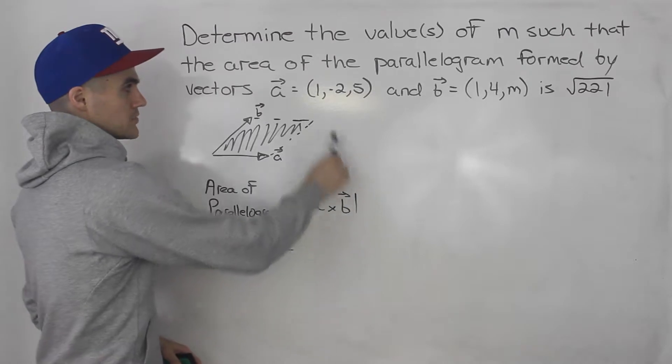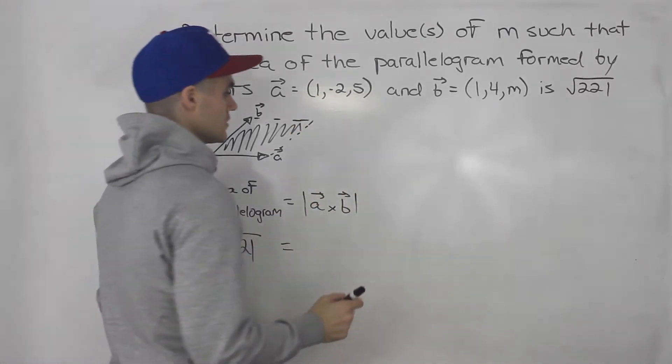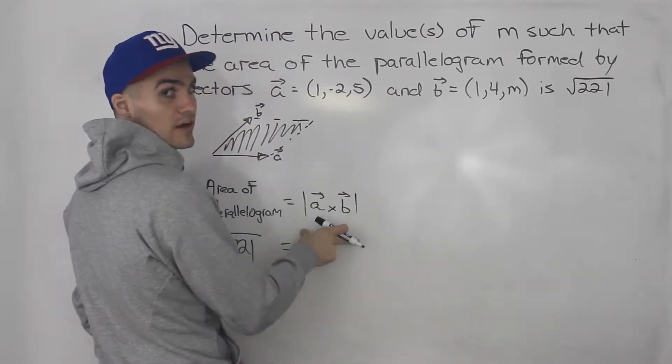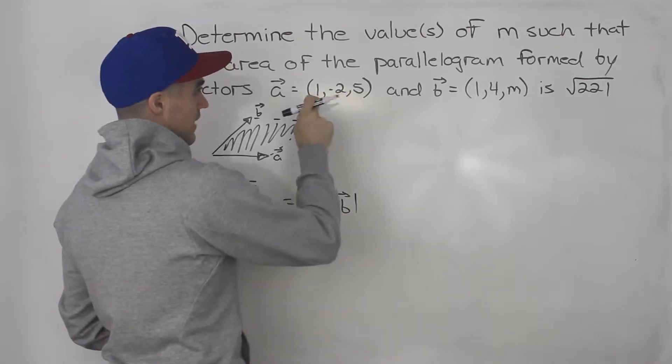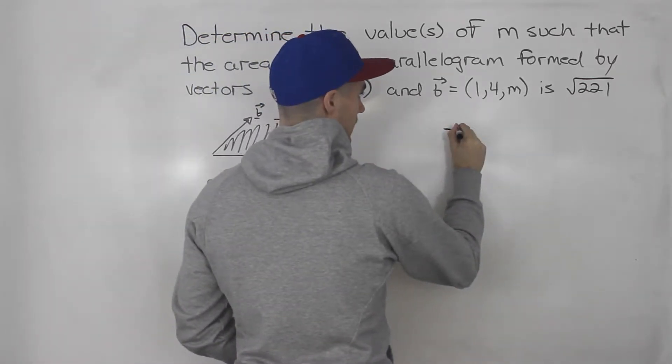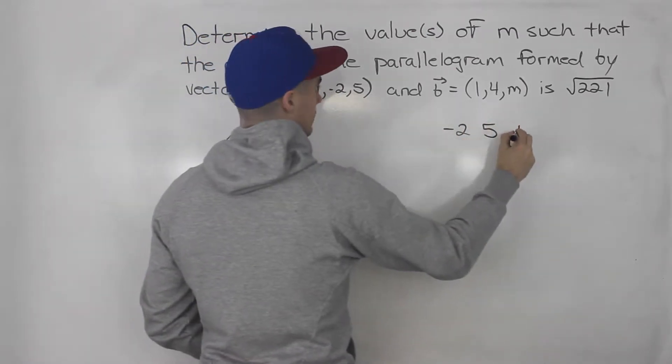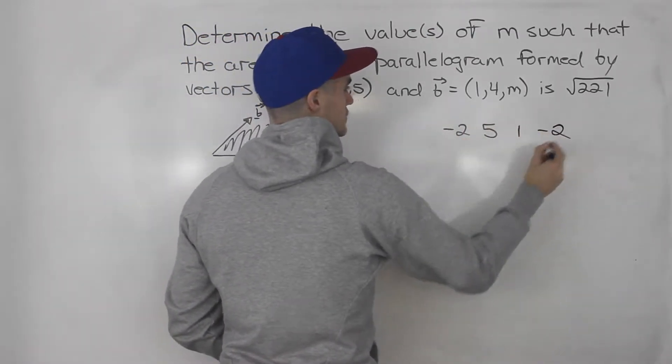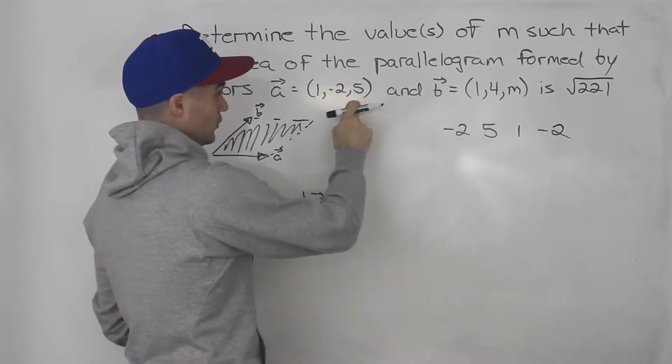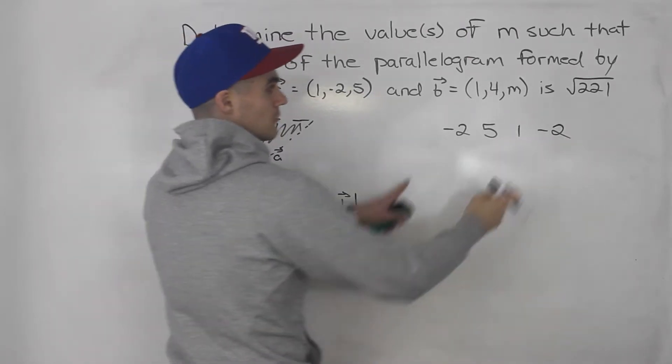The cross product between a and b, we don't know that, or the magnitude of that cross product. So let's find that first. Since a is the first vector, it doesn't really matter actually because we're finding the magnitude. The a vector we write on top of the b vector, but we start with the middle component. So we got negative 2, 5, and then 1, and negative 2. We always start with that middle component, then move to the right.